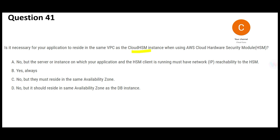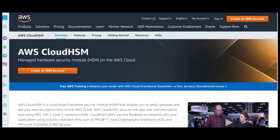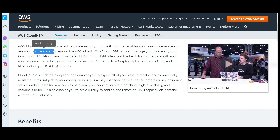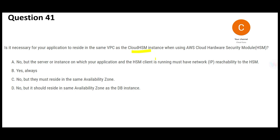There is something called Cloud HSM. It is a managed hardware security module. If you want to generate your own encryption keys on the AWS cloud, you can use this service. It uses FIPS 140 Level 3 validated HSMs to generate encryption keys — basically hardware-level encryption. Now, this question asks: your application resides in one VPC — is it necessary that it should be in the same VPC as the HSM?